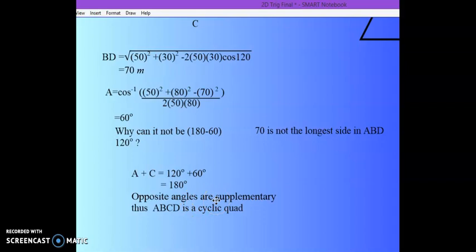So here I can conclude, because the opposite angles are supplementary, meaning adding up to 180, thus ABCD is a cyclic quad.